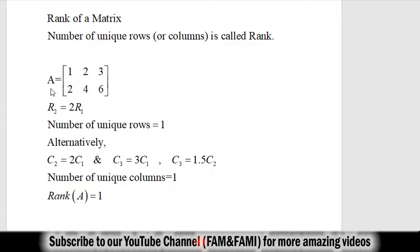Let's illustrate this idea by assuming a hypothetical matrix A containing 2 rows and 3 columns. If you focus on elements in row number 2, you can see that the elements in row 2 can be obtained just by multiplying each element in row number 1 by a constant 2. So 1×2 gives 2, 2×2 gives 4, 3×2 gives 6. Notationally we write it as row 2 equals 2 times row 1. So we say that the elements in row number 2 depend upon the elements in row number 1, or that row number 2 is not unique.